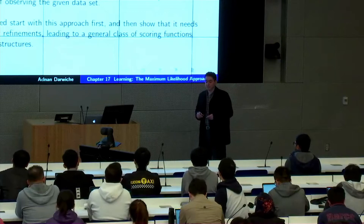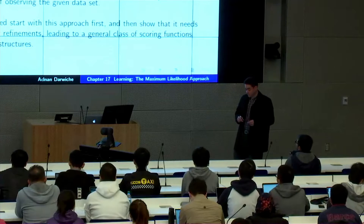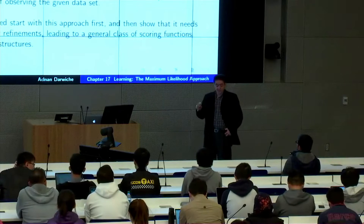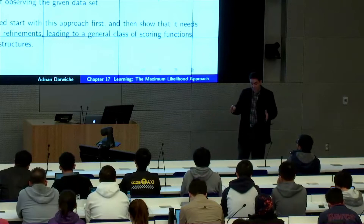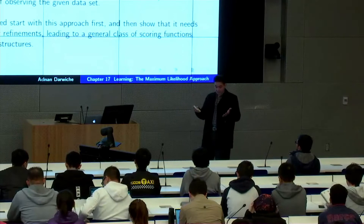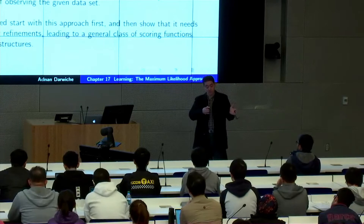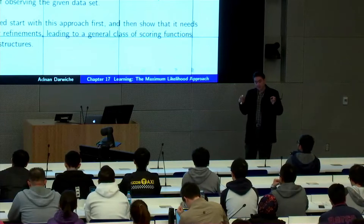What we'll do today is continue with our discussion of learning Bayesian networks. This is Chapter 17, one of two chapters dedicated to the subject. Last time we discussed learning network parameters — assuming a particular structure, with a complete or incomplete data set, and estimating parameters from data. What we'll do today is look at the complementary problem when we do not have a structure, so we will learn both the structure and the parameters as well.